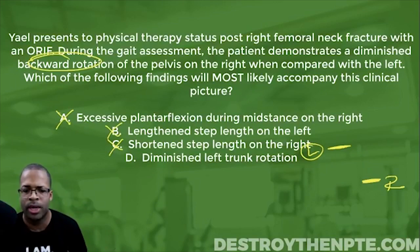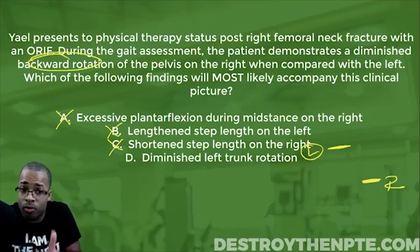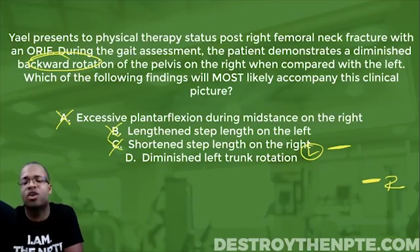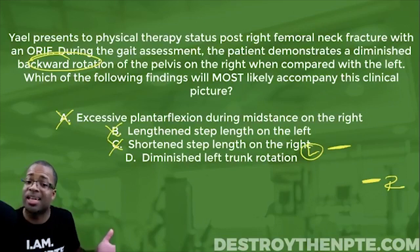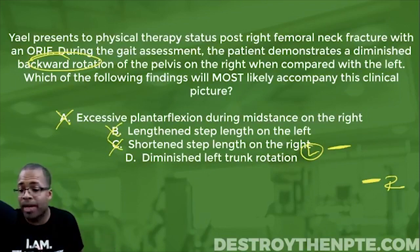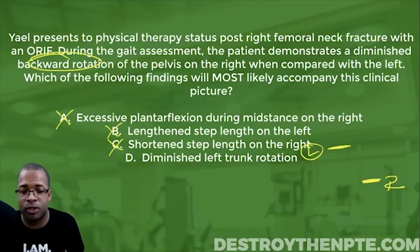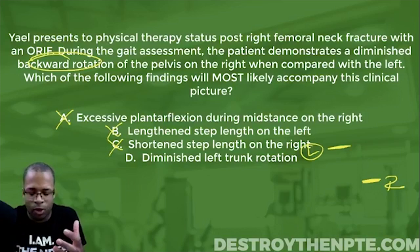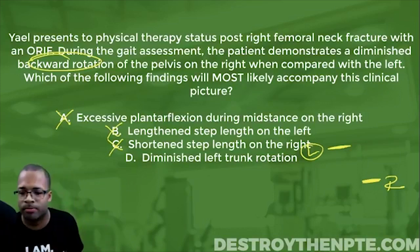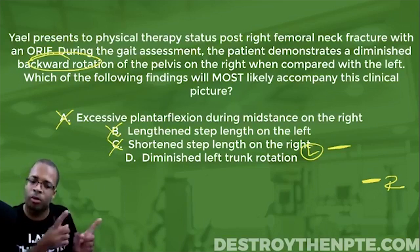It's an opposite motion pattern. With that in mind, what did we say the problem was? Diminished backward rotation of the pelvis on the right — meaning difficulty going into terminal stance on the right. And what trunk rotation goes with right terminal stance? We said that was left trunk rotation. So if the patient is limited in right terminal stance, they must also be limited in left trunk rotation.